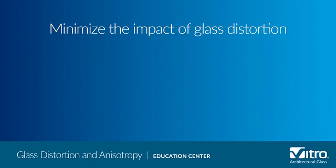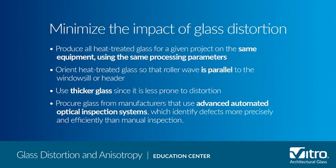The following steps can help minimize the potential impact of glass distortion inherent with heat treating processes: produce all heat treated glass for a given project on the same equipment using the same processing parameters; orient heat treated glass so that roller wave — the periodic wave imparted to glass during heat treatment, measured by the peak to valley distance — is parallel to the window sill header; use thicker glass, as it is less prone to distortion; and procure glass from manufacturers that use advanced automated optical inspection systems, which identify defects more precisely and efficiently than manual inspection.